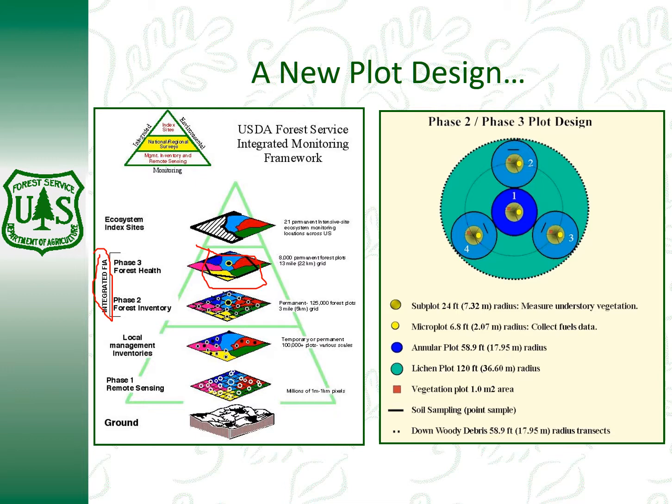In North Carolina, if you added up all those three-mile by three-mile hexagons across the state, that would make about 6,000 of them, so we actually have about 6,000 of those plots in North Carolina. Phase two was started back in the 70s — that's where they broke up the ground into these grids and started doing field collection. We're in phase three right now where they're actually collecting a little bit more information.